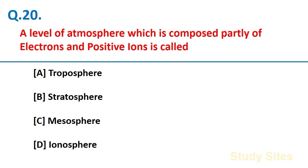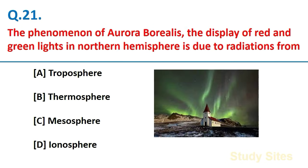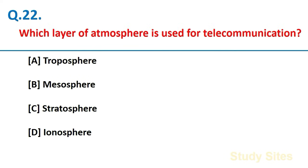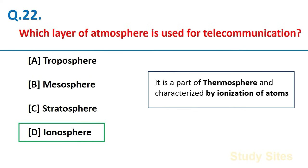A level of atmosphere which is composed partly of electrons and positive ions is called Ionosphere. The phenomenon of aurora borealis, the display of red and green lights in northern hemisphere, is due to radiation from Ionosphere. Which layer of atmosphere is used for telecommunication? Ionosphere. Ionosphere is a part of thermosphere and characterized by ionization of atoms.